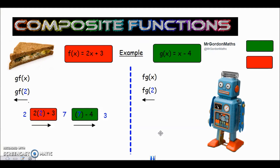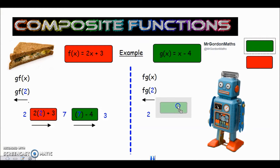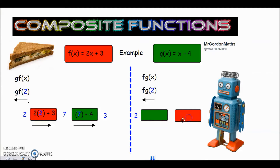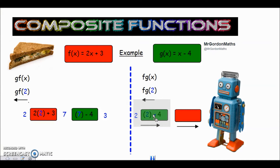Hopefully you've had a go at that. Let me set out a similar diagram. This time the g is the closest to the 2, so g is the first function we go through, and f is the second one. Putting 2 into the g function: the g function is just x take away 4, so 2 take away 4 gives us negative 2 coming out of that function.